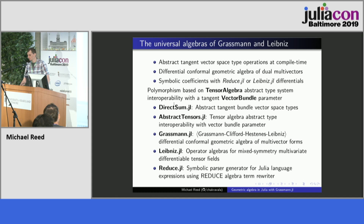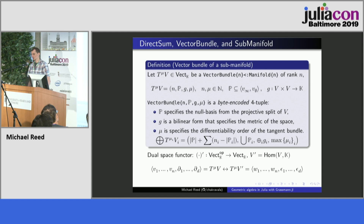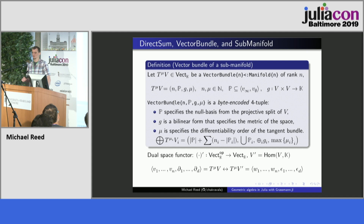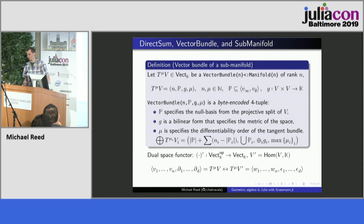The DirectSum package works like this: we have a vector bundle type which is a subtype of a manifold. We encode important information at pre-compilation time for all algebraic operations — the dimension of the space, a parameter for specifying the projective geometry, a parameter for the metric tensor, and a number for the order of differentiability. This is a parametric tuple type, so you can do direct sum operations, intersections, and unions to work with subalgebras. There's also a dual space and specific notation for basis elements.